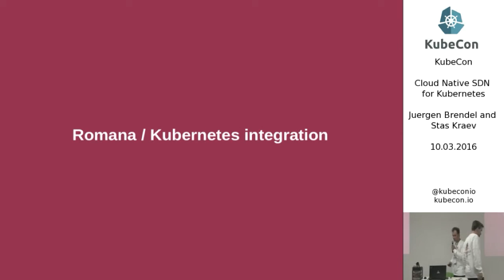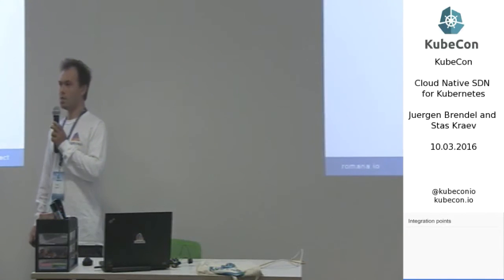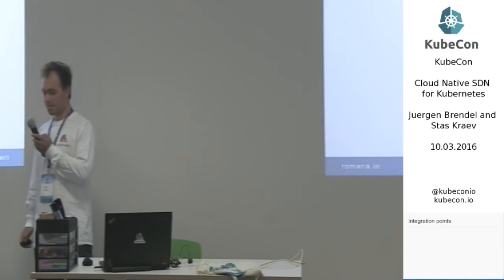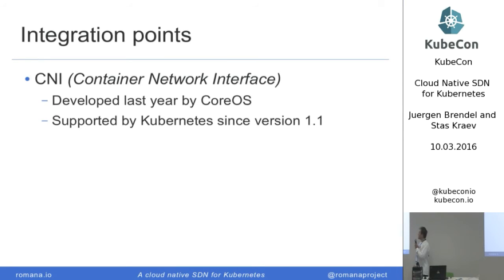Let's talk about Kubernetes. There are two integration points we use to bridge Romana to Kubernetes. The first one being CNI — the Container Network Interface. It's basically a specification developed at CoreOS, defined as a plugin-based network solution for container networks on Linux. It means you can have different plugins running on the same interface and switch them back and forth. Thanks to a Red Hat contribution, this interface has been supported in Kubernetes since version 1.1.1, and we are happily using it.